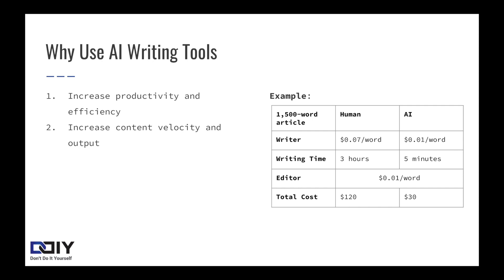We manage a portfolio of websites ourselves, and we recently went from about 20 posts a month to almost six times that. We could scale even further, but we do still incorporate a lot of editing and quality checks into our workflow. You can also become a better writer with grammar, spelling, and tone. I personally find it much easier to edit than to write from scratch. Not to mention, it's an easy way to overcome writer's block. And finally, you can dramatically reduce your cost for content. We're able to cut our own internal costs down by almost 75% without sacrificing quality.